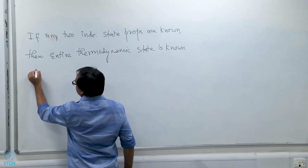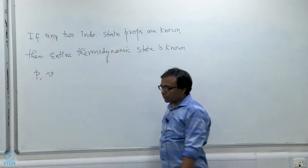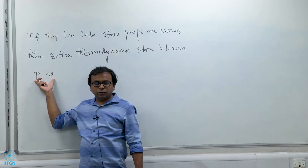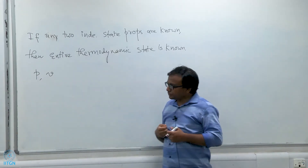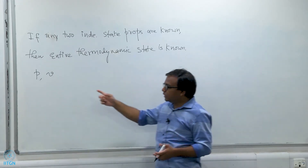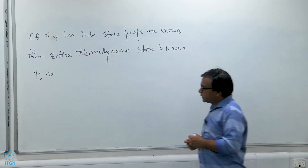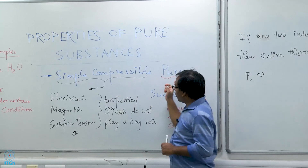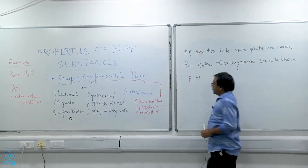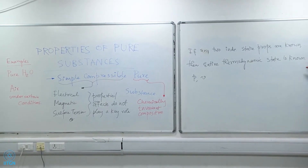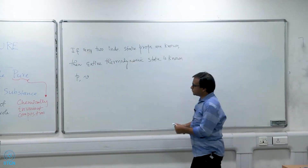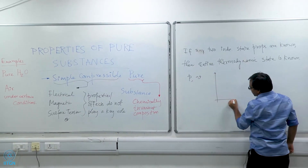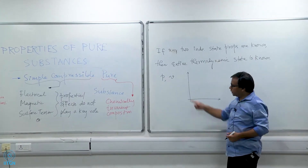For example, if you know pressure and specific volume of a simple compressible pure substance, that is enough to completely specify its thermodynamic state. You can compute internal energy and any other state property from just P and V. However, it must be both simple compressible and pure — if either condition is not met, this does not work. This gives us immense power, because we only need two state properties to plot any thermodynamic process on a 2D plot.